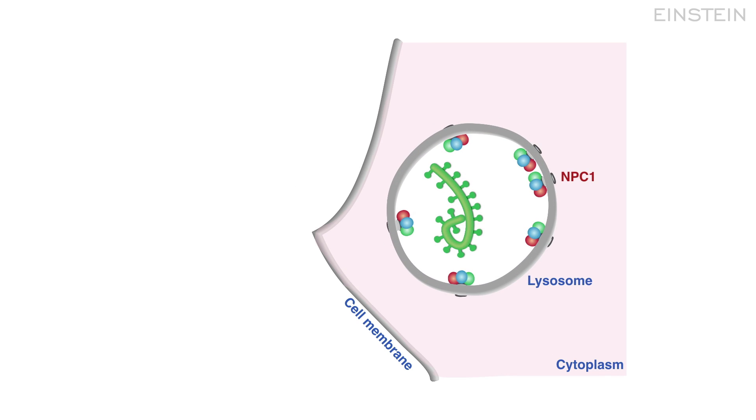Once it's in the lysosome, the virus gets transformed into a new state that allows it to bind to one of our own proteins called NPC1. This is the cue for the virus to fuse with the lysosomal membrane and release its genetic material or payload into the cell. This payload reprograms the cell to churn out new viruses, and the cycle continues.